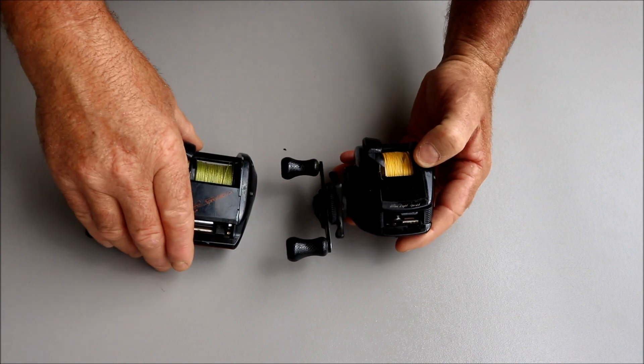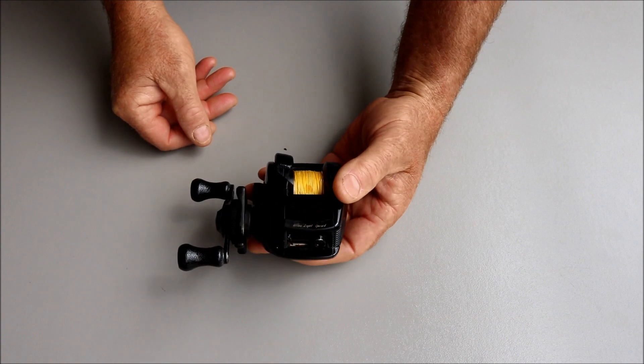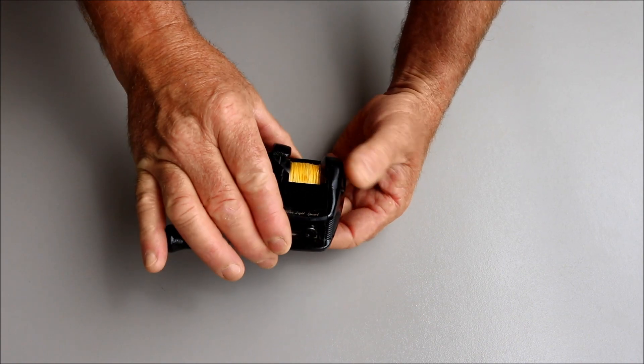And the reason for that is I've looked after them. The easiest way to look after your bait caster reel is simple. When you get home from fishing the first thing I do is I take the reel off my rod.